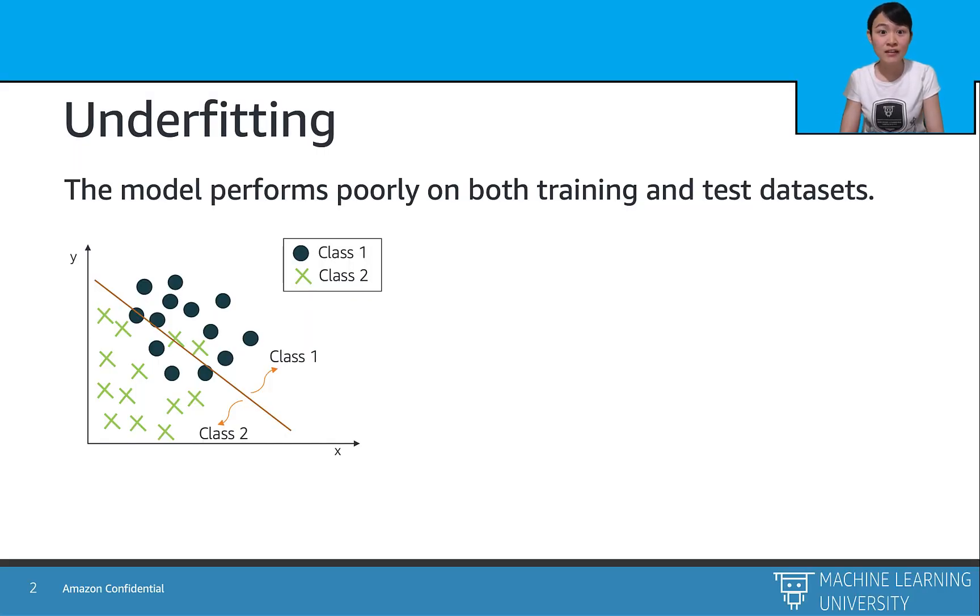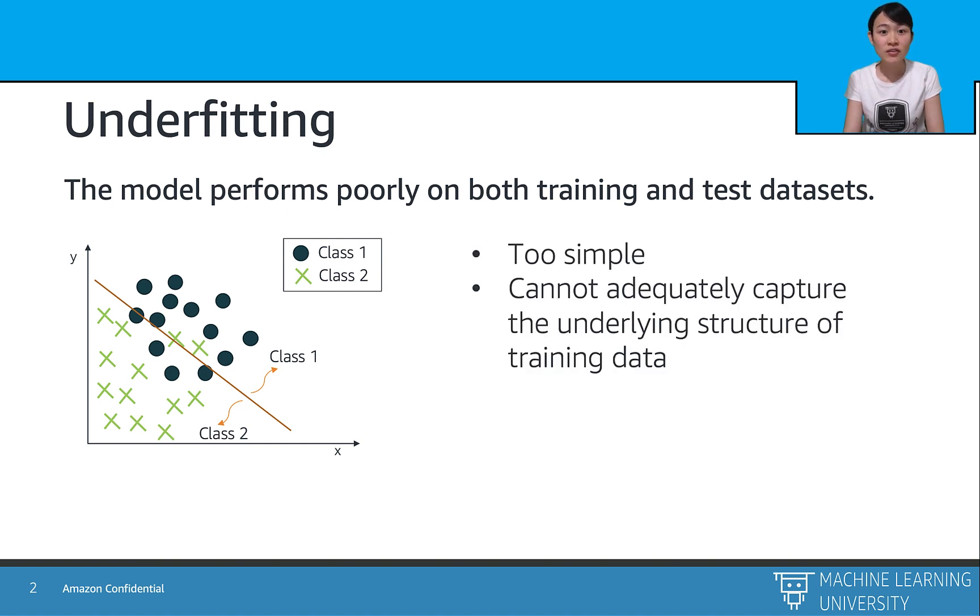So let's start with underfitting. When we monitor the model loss and the model performance, we may find out that the model performs poorly on both training and test dataset. So why does it happen? The fundamental reason is that the model is too simple to capture the underlying structure of the training data.